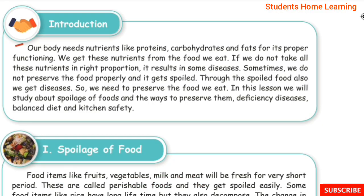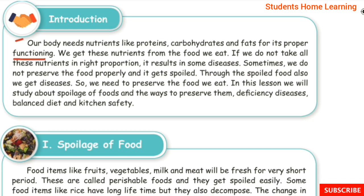Introduction: Our body needs nutrients like proteins, carbohydrates, and fats for its proper functioning. If we do not take all these nutrients in the right proportion, it results in some diseases.